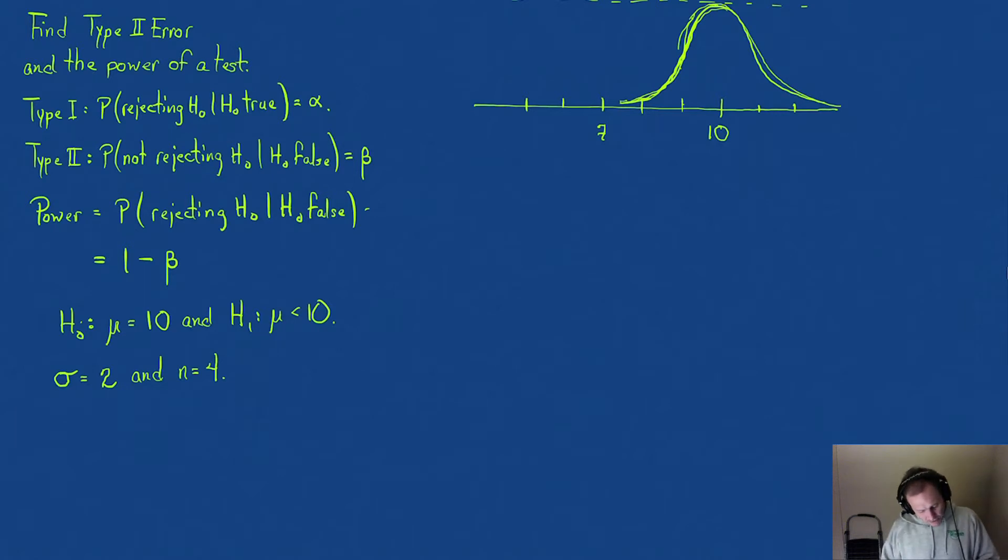Let's use alpha equal to 0.075. If you look in your table of values or use a software package or calculator, you would find your critical value equal to negative 1.44.